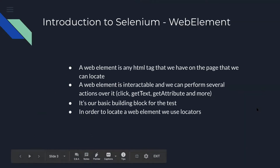As we studied in the previous meeting, HTML is a markup language. It is built upon hierarchy and tags. Each HTML tag can be transformed to a web element. A web element is any HTML tag that we have on the page and we can locate. A web element is interactable — we can perform several actions over it. For instance we can click on it, we can get the text, we can get an attribute of this tag, for instance the height, and it's also our basic building block for the test.